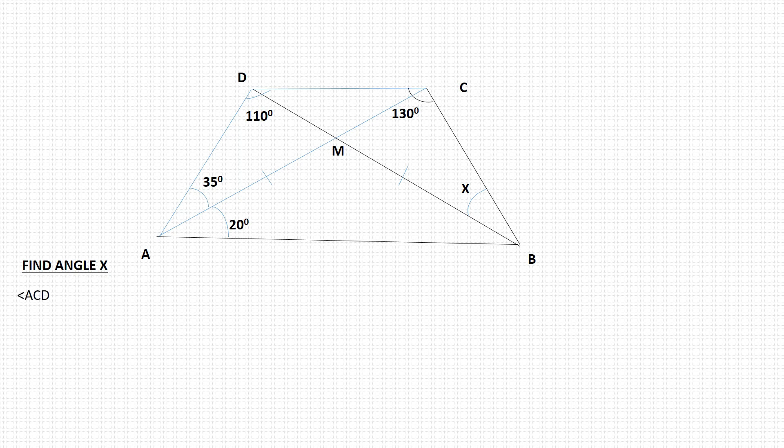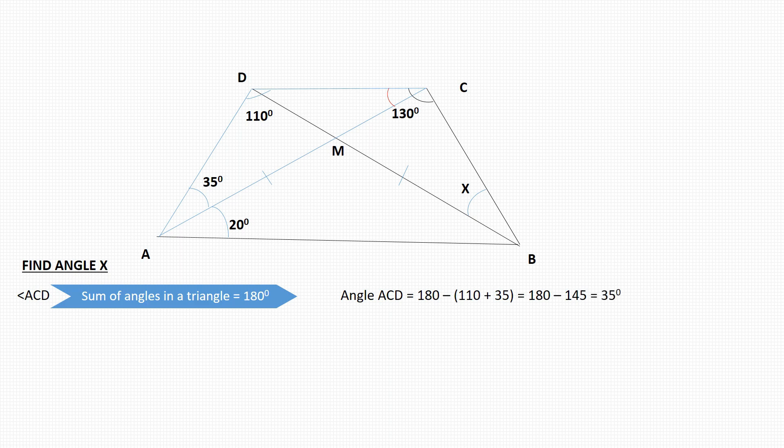First of all, we'll start by looking for angle ACD. And in this we're going to use the property that the sum of angles in a triangle is 180 degrees. If you look at that triangle ADC, we can work out the angle ACD by just taking 180 degrees, subtract the sum of 110 and 35 degrees, and that gives us 35 degrees.